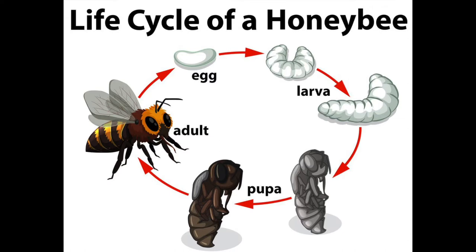The life cycle of the honeybee is 21 days long. It begins when the queen bee lays eggs inside the cells, and then the worker bees feed pollen, royal jelly, and nectar. It then develops into the larva stage, and from there the pupa stage, where the bee is starting to begin formation. And then it emerges as an adult bee.